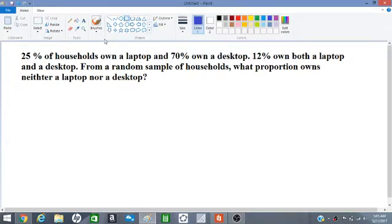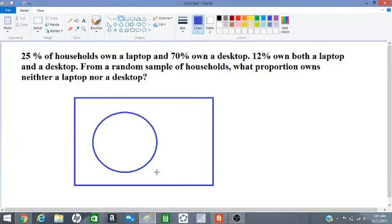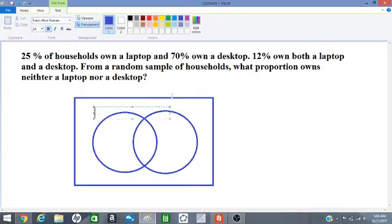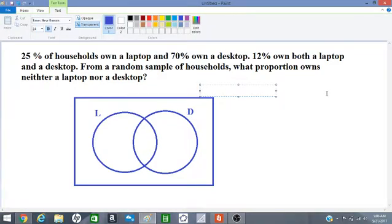So let's illustrate this on our Venn diagram. We have one set of people owning a laptop and another set of people owning a desktop. We can call this capital L for laptop and we can call this other set capital D for desktop. We have a universal set here.